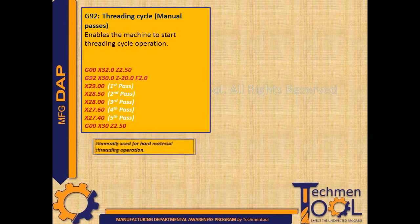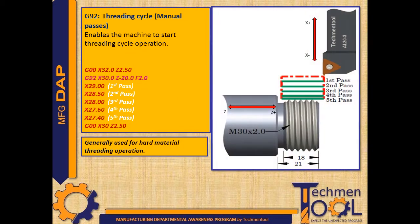G92 threading cycle manual passes. This code enables the machine to start threading cycle operation. In the following program, tool rapidly moves to X32 Z2.5 position. This method is generally used for hard material threading operation. After that, manual passing threading cycle starts by moving the tool to X30 Z-20 position with a feed rate of 2 units. Different passing tool movements take place as per the instructed X values to create a thread profile, before the tool rapidly returns to X32 Z2.5 position.